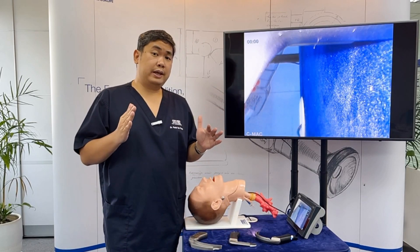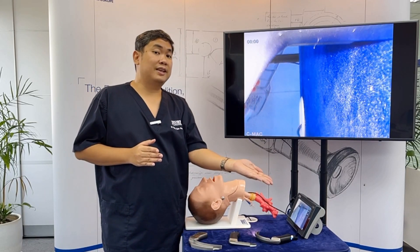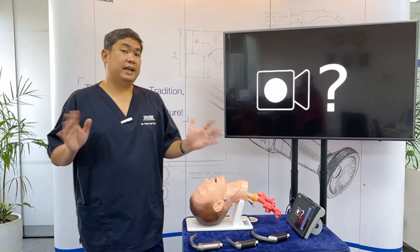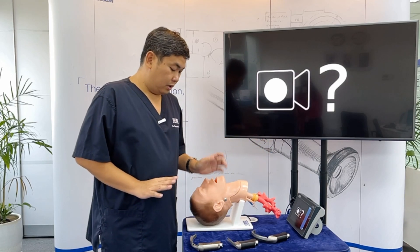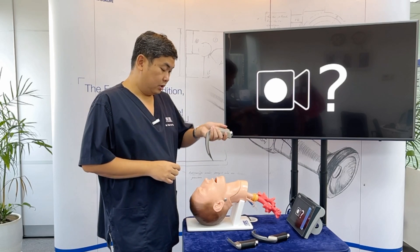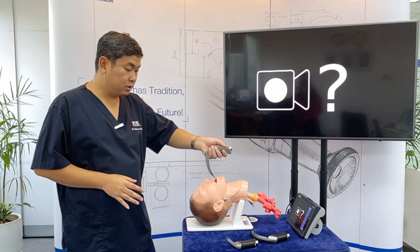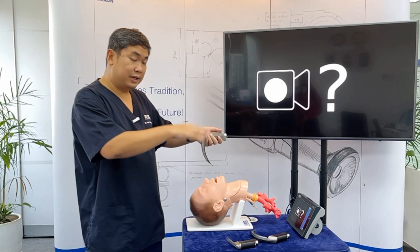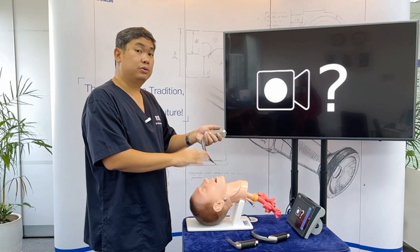So the curved blade goes to the vallecula, and the Miller blade goes under the epiglottis and lifts it. Regarding insertion: when using a curved blade such as the Macintosh, you enter on the right side of the patient's mouth and swipe the tongue to the left, so that the right side becomes your working area and you have a bigger space to work with.